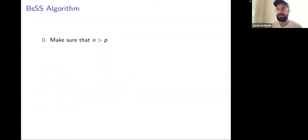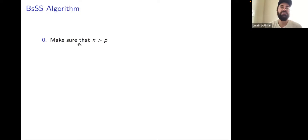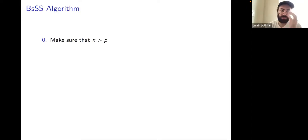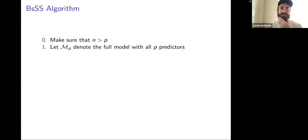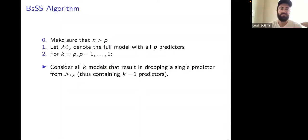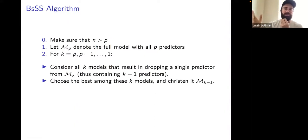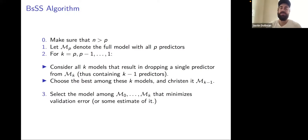Backwards stepwise subset selection requires first ensuring n is greater than p. Intuitively, it starts with the full model and removes variables one at a time — keeping whichever removal hurts least — working down to the null model.